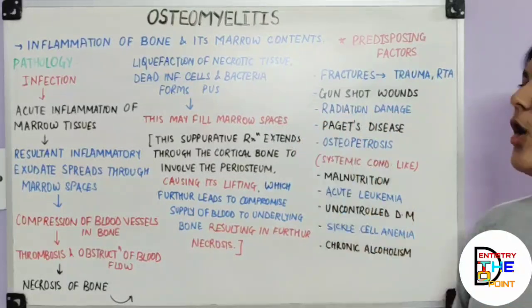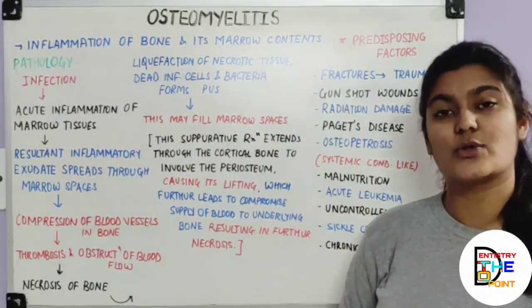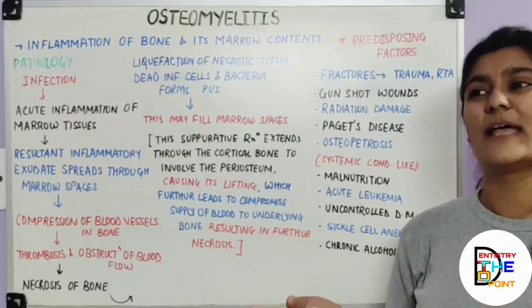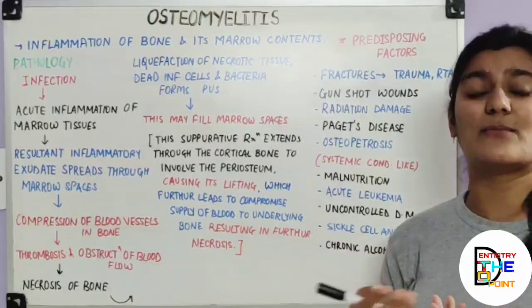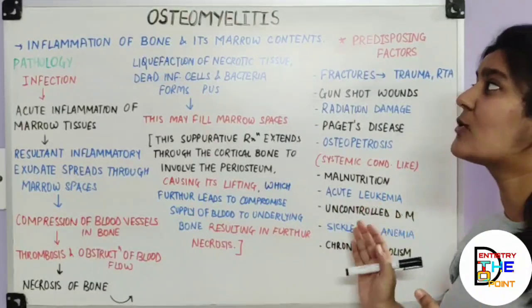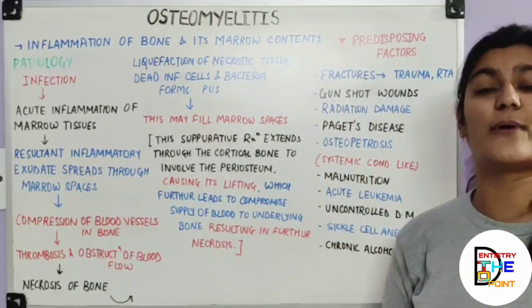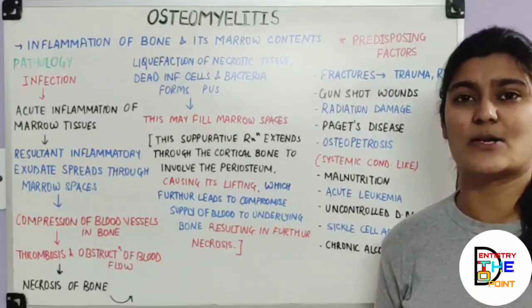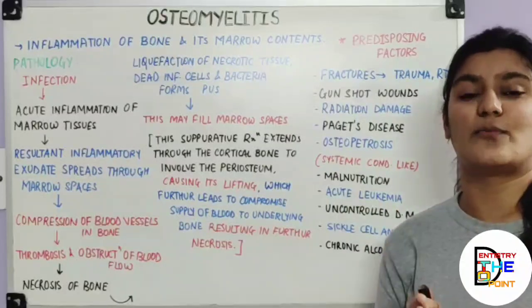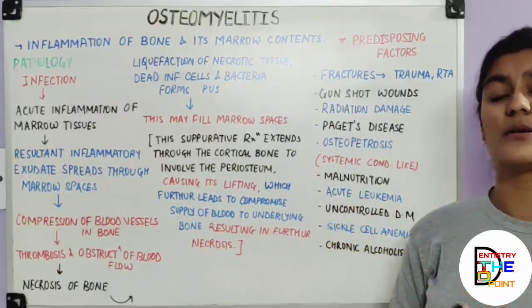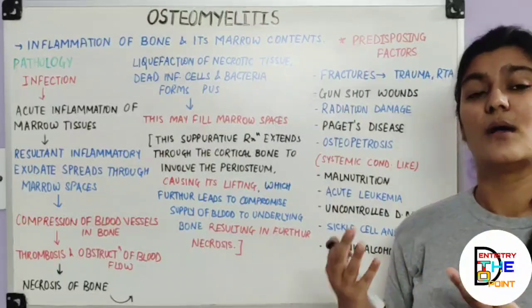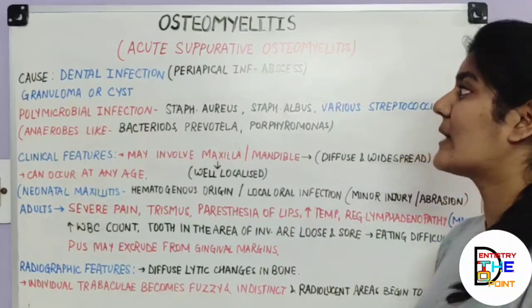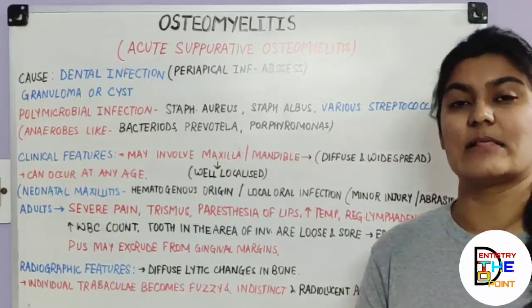Various researchers have also proposed additional predisposing factors such as mobile fracture bones, immunologic dysfunctions or abnormalities, and carious teeth in the line of fracture. These are among the various other factors proposed by researchers as predisposing factors for osteomyelitis.